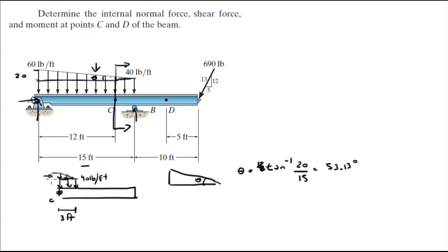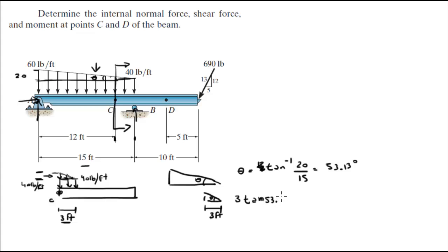Now that we have theta, we can find the height h of the small triangle at C. The small triangle shares the same angle theta as the large one. The length from here to the cut is 3 feet, so: h equals 3 times tangent of 53.13 degrees, giving h equals 4. So from here to here there are 4 pounds per foot at the top of the small triangular load.